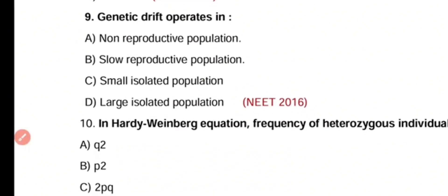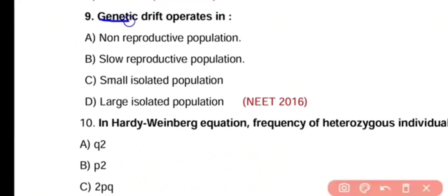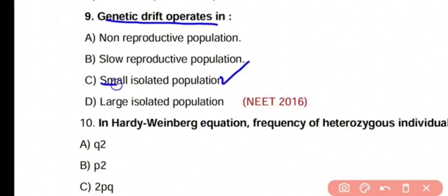Question number 9. Genetic drift operates in non-reproductive population, slow reproductive population, small isolated population, or large isolated population. The correct answer is option C. Genetic drift always operates in small isolated populations.